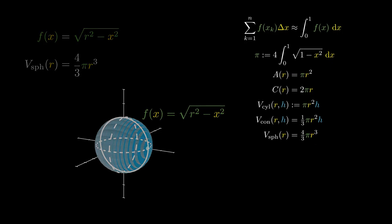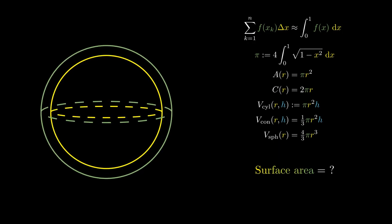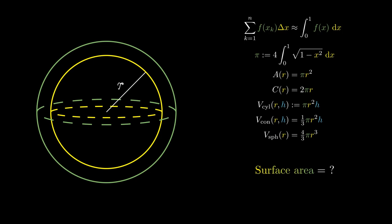But just like the circumference, what is the surface area of a sphere? We can start with a sphere with radius r and increase it by a little bit. This additional space can be approximated by the surface area times the increment in the radius.